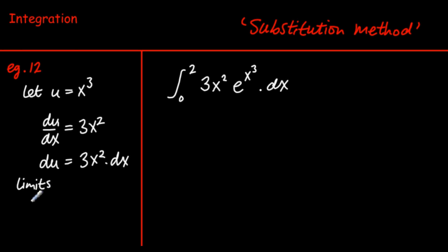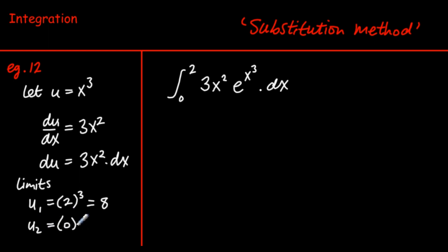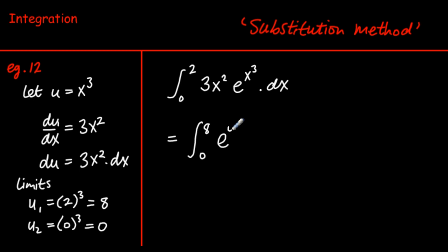We also change the limits. Our original limits are 2 and 0. Since u = x³: 2³ = 8, so we change the limit 2 to 8; and 0³ = 0, so our new limits are 8 and 0. We rewrite the initial expression making all the changes: the limits 0 to 2 become 0 to 8, x³ becomes u, and 3x² dx becomes du.